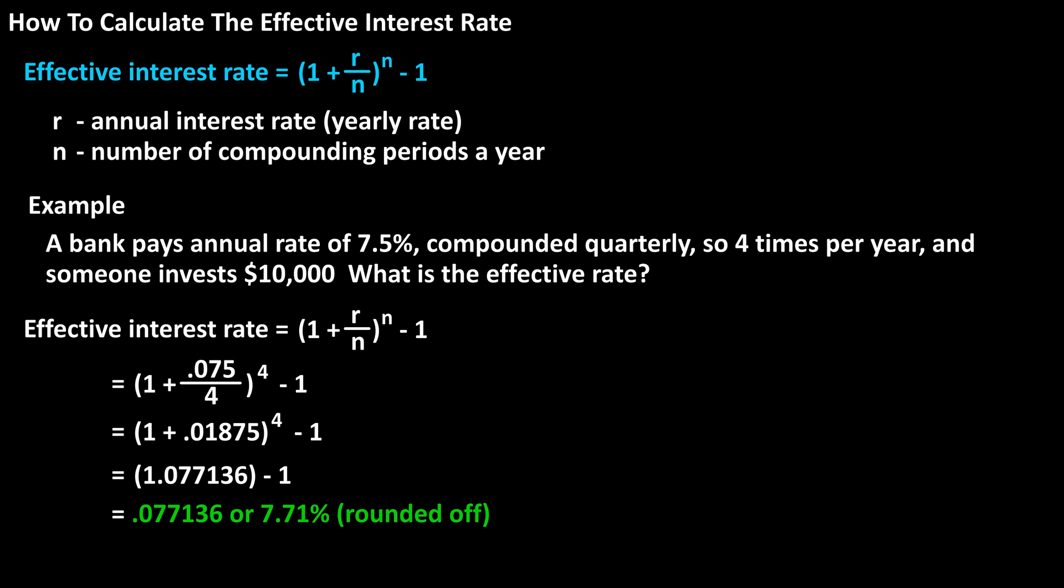So, using this rate of 7.71%, if we multiply the $10,000 times it, we get $771.36. And this is the amount of interest someone would make in a year.